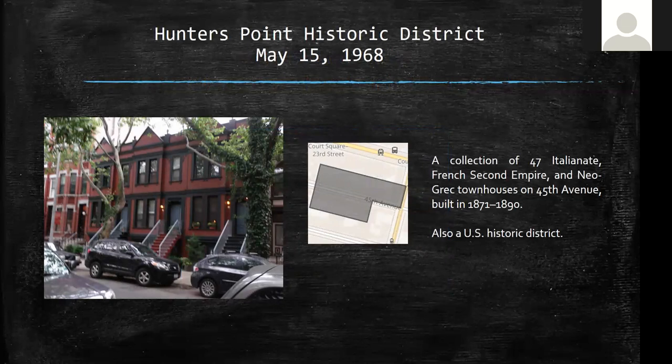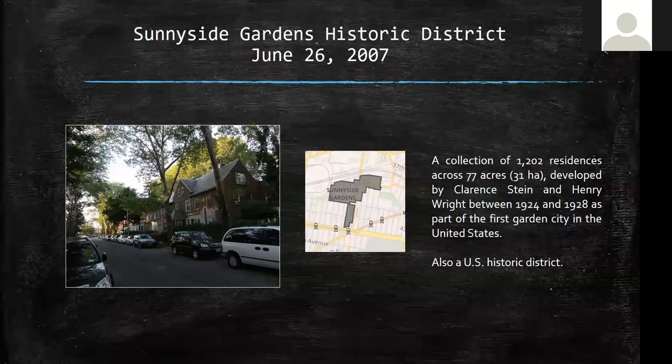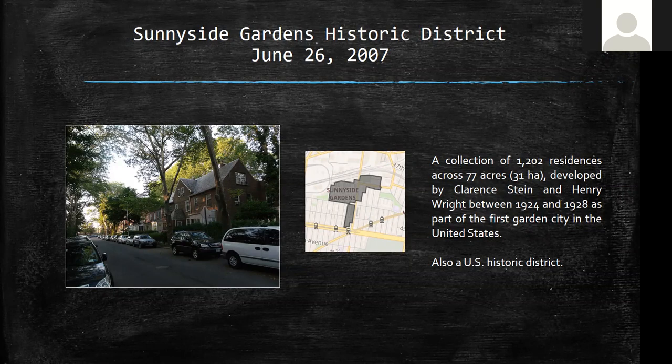First is the Hunters Point Historic District — a collection of French Second Empire and Italianate townhouses on 45th Avenue, built between 1871 and 1890. It's also a United States Historic District. It's a beautiful, really stunning block. Next is Sunnyside Gardens, which is very unique. Built in the 1920s, there was much discussion about garden apartments — density with lots of green space, not looking like traditional Manhattan or Brooklyn blocks. Designed by notable architects Clarence Stein and Henry Wright, it's 77 acres and the first garden city in the United States. It's also a U.S. Historic District.